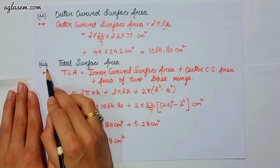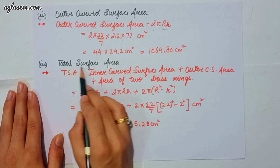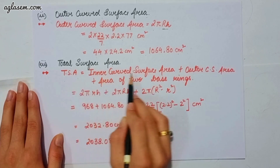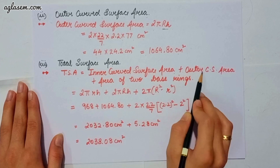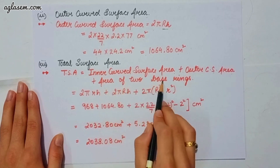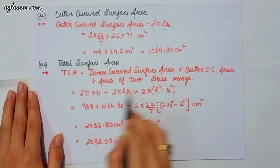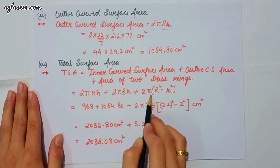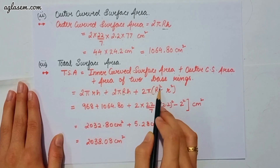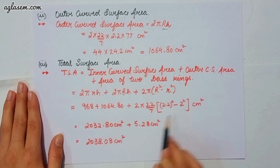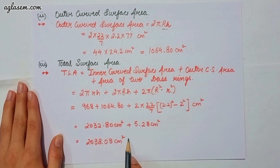Moving to the third part, the total surface area equals inner curved surface area + outer curved surface area + area of two base rings. That is 2πrh + 2πRh + 2π(R² − r²). Applying the values, the total surface area = 2038.08 cm².